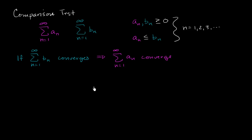So why is that useful? If you have your a sub n series and you want to prove that it converges — you have a gut feeling it converges — the comparison test tells you: find another series whose corresponding terms are at least as large as the corresponding terms here, and if you can prove that one converges, then you're good with this one. Of course, this only applies when each term of your original series is non-negative.